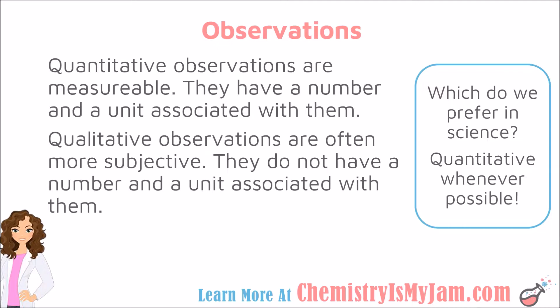In science, we prefer quantitative observations. That's because we want science experiments to be repeatable, and in order for something to be repeatable, it's best to know the exact numbers that go along with your measurements. So whenever possible, we want to make quantitative observations.